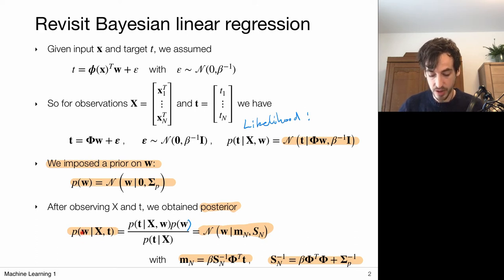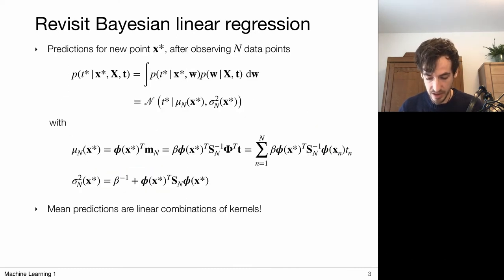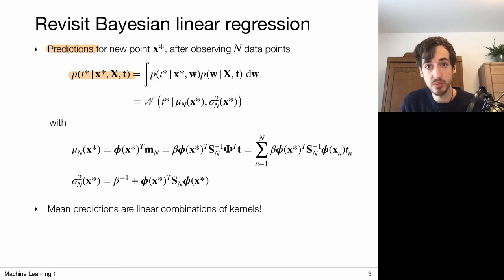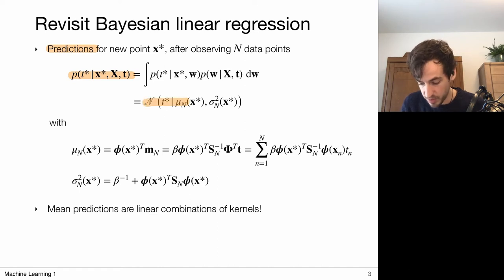We derive a probability distribution for w given our data set, meaning there may be multiple model parameters w that are highly probable given the observed data. If we want to make predictions, we can do Bayesian model averaging: the predictive distribution is a weighted sum of parameterized predictive distributions — parameterized by w — weighted with the corresponding posterior probability. Because everything was Gaussian, this predictive distribution will also be Gaussian, and we can derive expressions for the predictive mean and predictive variance.